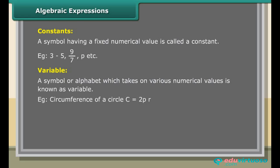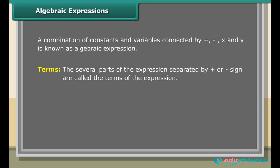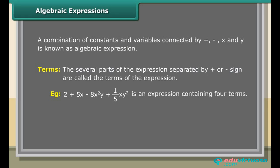Algebraic Expressions: A combination of constants and variables connected by +, −, ×, and ÷ is known as an algebraic expression. Terms: The several parts of the expression separated by plus or minus signs are called the terms of the expression. Example: 2 + 5x − 8x²y + (1/5)xy² is an expression containing 4 terms: 2, 5x, −8x²y, and (1/5)xy².